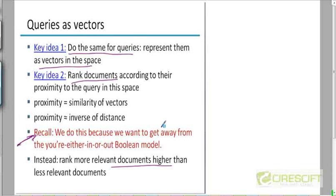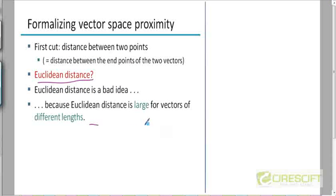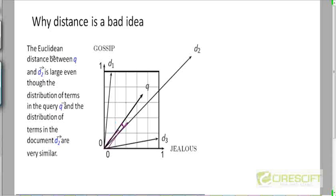Now let's look at some other ways to compute the proximity between the query and the document. One is to just take the dot product. Here's another idea: why not look at the Euclidean distance between the query and the document? This is a different scoring scheme — we compute the Euclidean distance between the query and all the documents and then rank them in decreasing order of that distance.